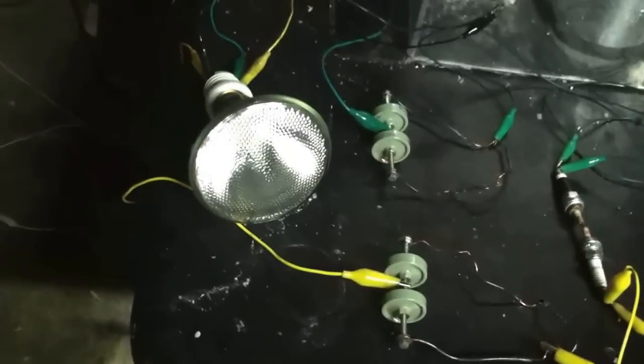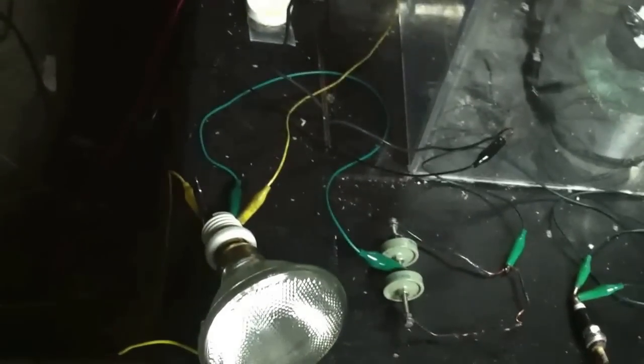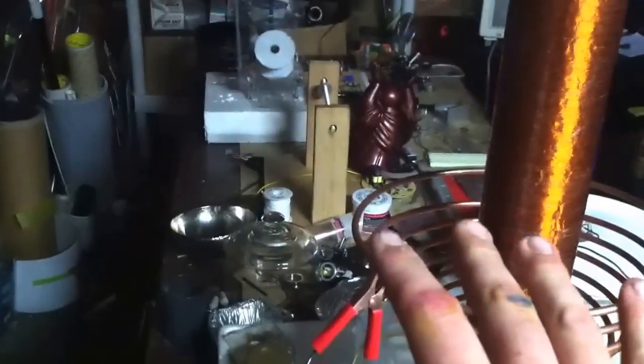Then I upgraded my bulb to a 90 watt halogen. And I did some other transmission experiments, I was using that as a receiver coil.